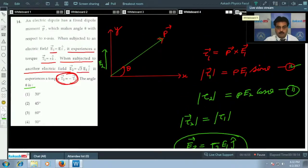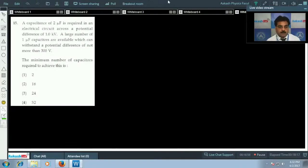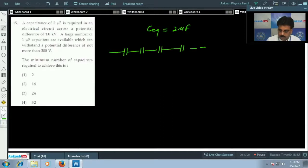A capacitance of 2 micro Farad is required, so equivalent capacitance is 2 micro Farad. If I go for the diagram, suppose there are m number of capacitors connected in series with C equals 1 micro Farad, and if I consider there are n rows.